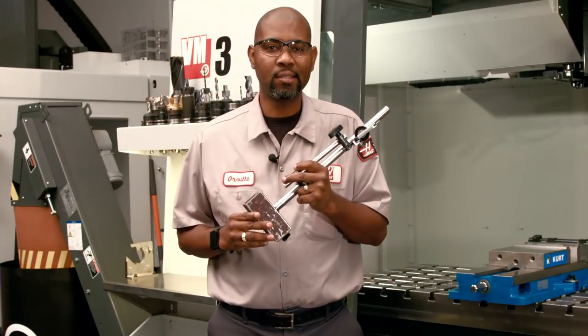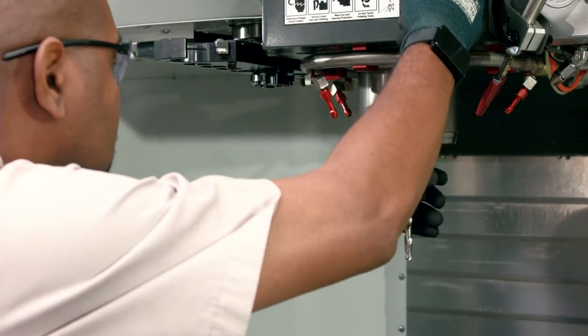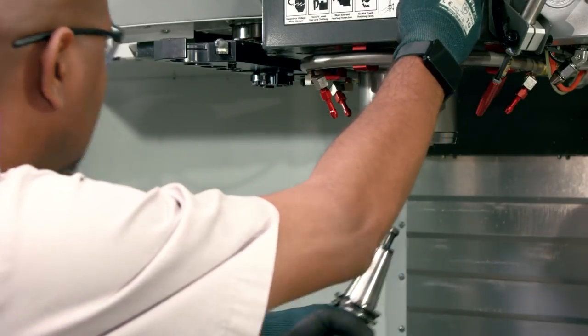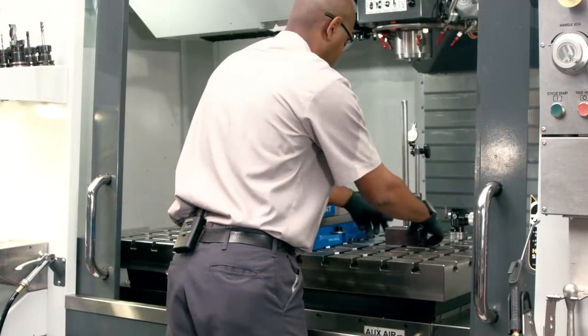To check this you need a magnetic base and a dial indicator. Now remove any tool that's in the spindle. Clear a spot on the table and mount the magnetic base and indicator.